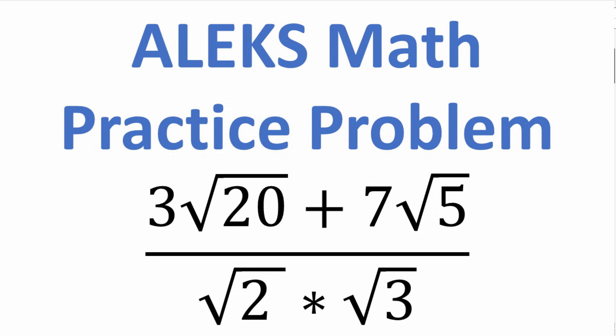And what I have for you here is a practice problem. So let's go ahead and take a look at the problem. We want to simplify this expression. The expression is 3 times the square root of 20 plus 7 times the square root of 5, all over the square root of 2 times the square root of 3. So this is the problem. If you can figure this out, go ahead and put your answer into the comment section. I'll show you the correct answer in just one second. Then of course, we'll walk through how to solve this problem step by step.